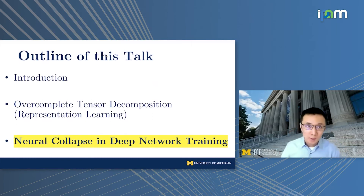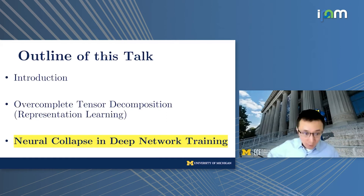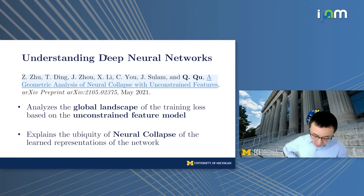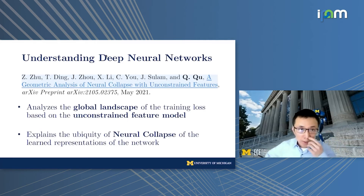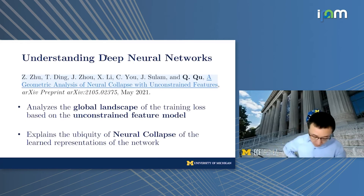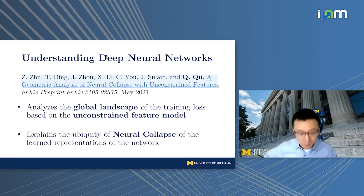Secondly, I want to discuss another work we just archived this month on the neural collapse phenomenon in the last layer representation learned of neural networks. The work provides a global landscape analysis of the training loss with respect to the last layer features and classifiers, under a simplification we call the unconstrained feature model. Our result explains the prevalence of neural collapse in learned representations of neural networks.